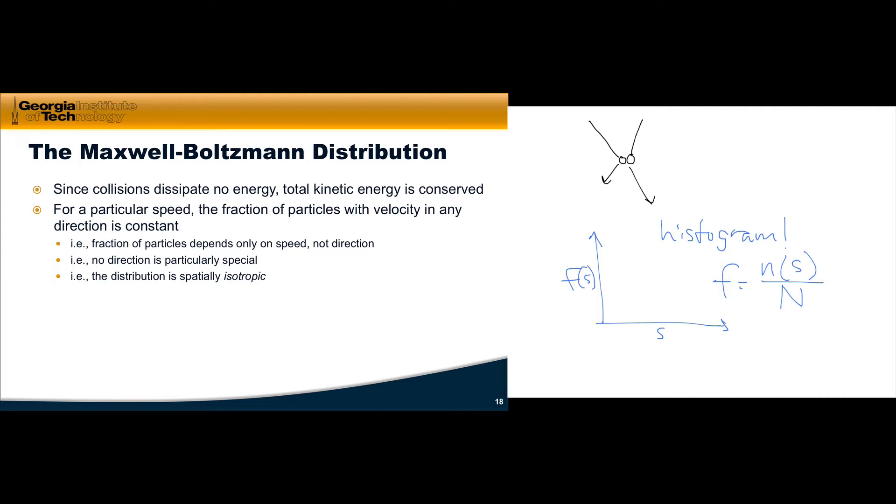He also reasoned that for a particular speed, the fraction of particles with velocity in any particular direction is constant. That means if we imagine a particle with a velocity in some direction, v1, when we imagine another particle with velocity in a different direction, v2, such that the magnitudes of the two velocities are the same, or in other words, the two speeds are the same.